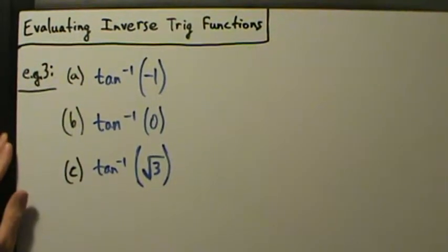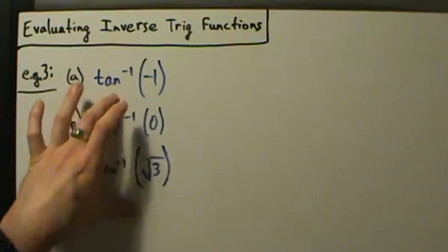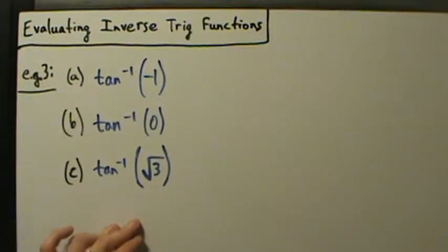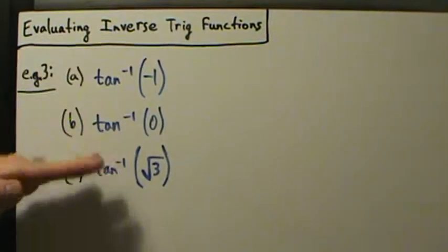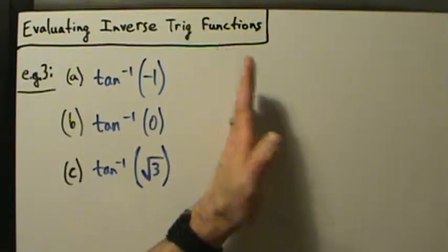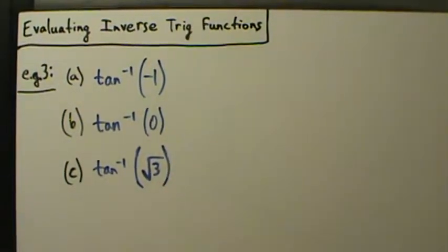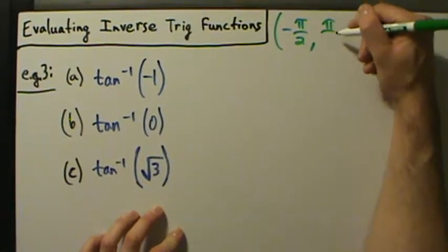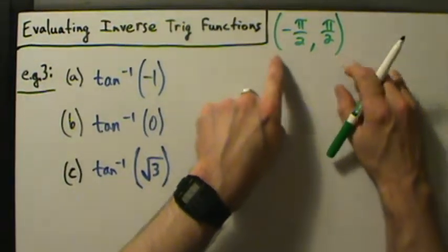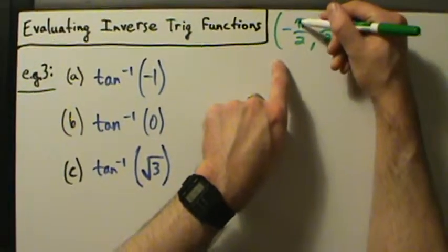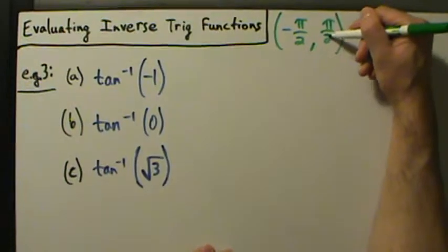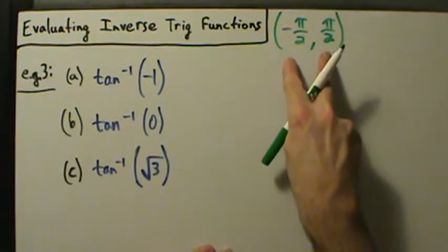Here's example 3 with evaluating inverse trig functions. We're going to talk about the inverse tangent function. Before we move on, we want to remember what the range of the inverse tangent function is, because when we evaluate these functions we want to make sure we get numbers in the proper range. The range is between negative pi over 2 and positive pi over 2, with rounded parentheses because we do not include the endpoints — so negative pi over 2 is strictly less than the output, which is strictly less than pi over 2.